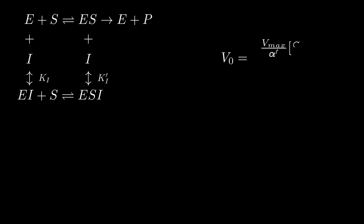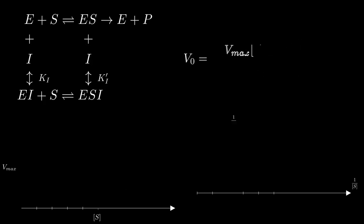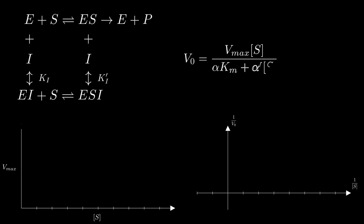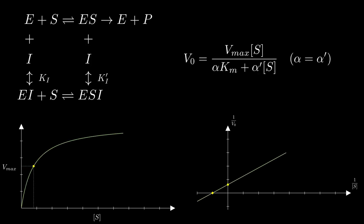In fact, when alpha is equal to alpha prime, we call this special type of mixed inhibition non-competitive inhibition, because the inhibitors do not contribute to a change in Km.